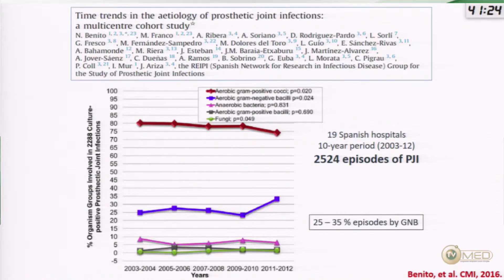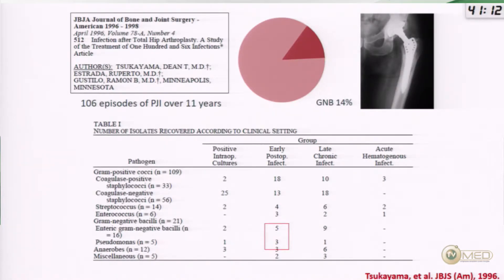Gram-negative infection in prosthetic joint infection, which may be representative of other hardware-related infections, accounts for around 30 percent and has grown in recent years. The importance of gram-negatives in prosthetic joint infections is largely dependent on clinical presentation. We know since many years, from the work of Sukajama and collaborators — a classic study — that in early post-surgical infections just after replacement of the prosthesis or device, we may have a higher frequency of gram-negative infection, which is more rare in chronic or hematogenous infection.